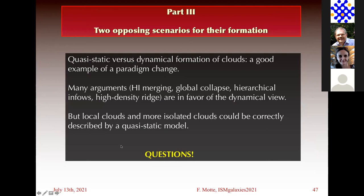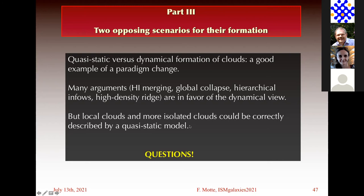For the conclusion of Part 3: we have several modes of cloud formation — quasi-static versus dynamical — and this is a very good example of a paradigm change. In the 1970s the community thought more about dynamical formation, then swung to quasi-static because it's easier to think: first I form a cloud, then a filament, then a star. Many arguments now say the dynamical view is winning for most regions in the Milky Way. But local and isolated clouds, like inter-arm clouds, could be correctly described by quasi-static models. It really depends on where you look in the galaxy.